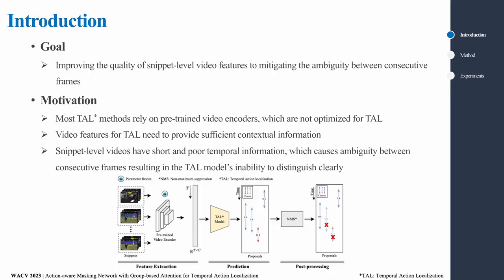The goal is improving the quality of snippet level video features to mitigate the ambiguity between consecutive frames. Most Temporal Action Localization frameworks model temporal relationships based on features extracted from pre-trained video encoders.